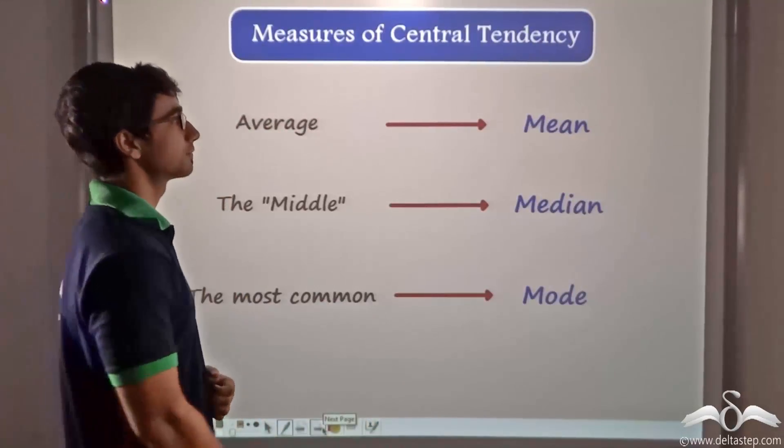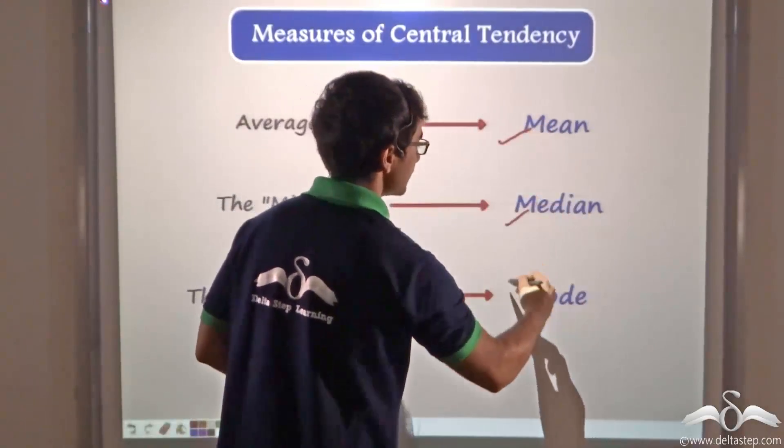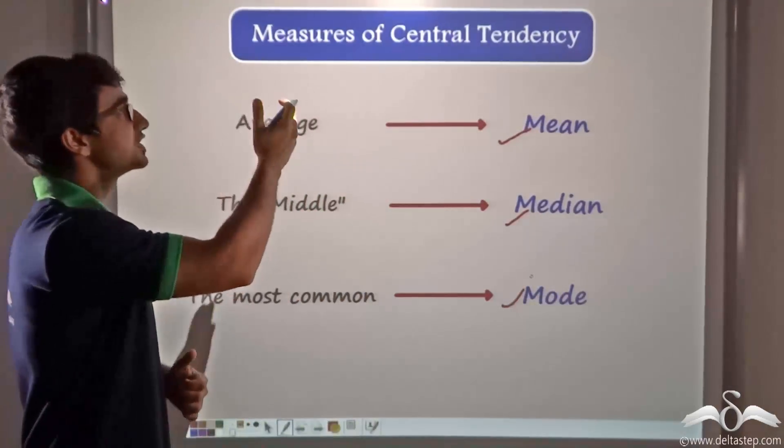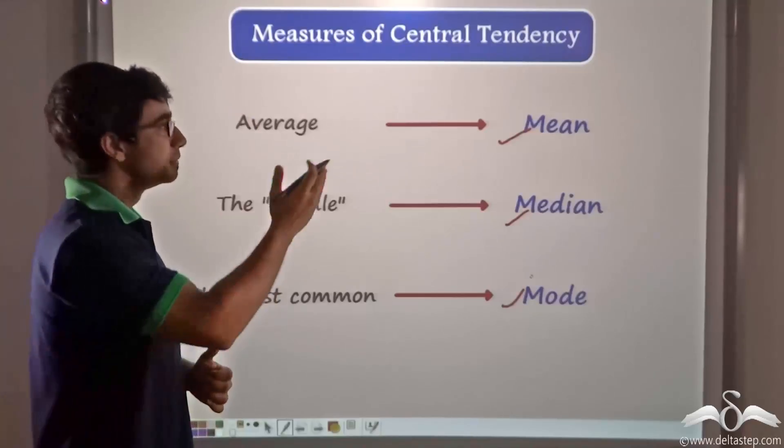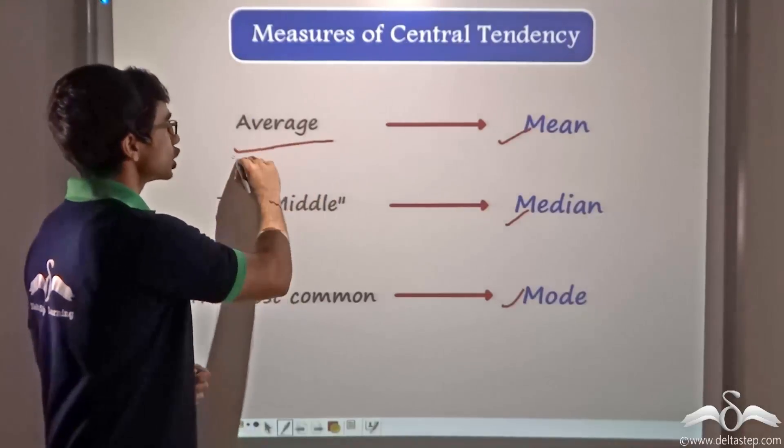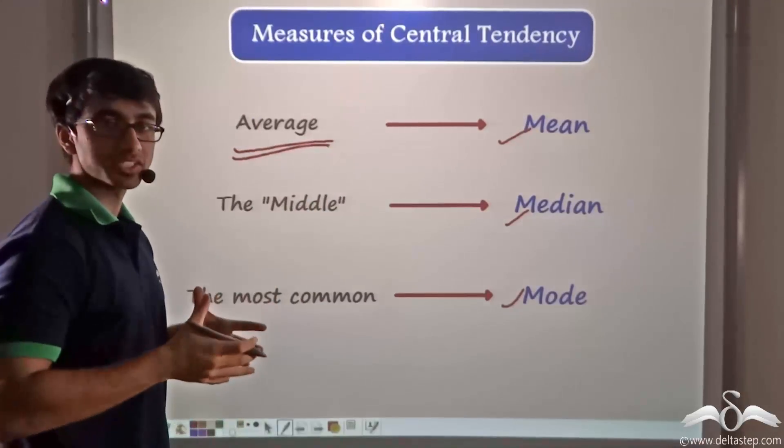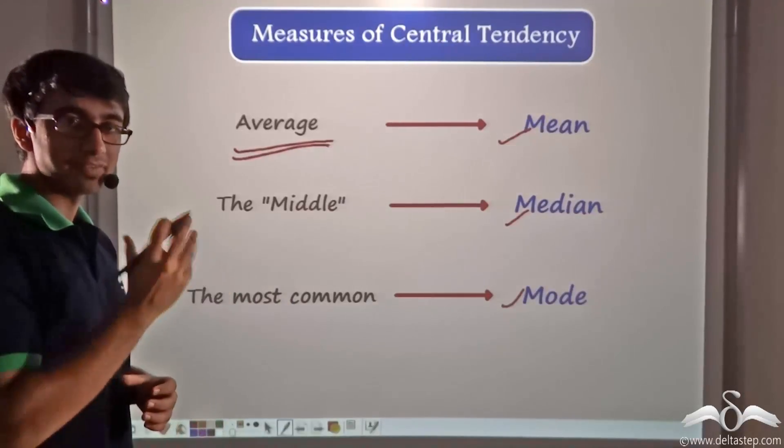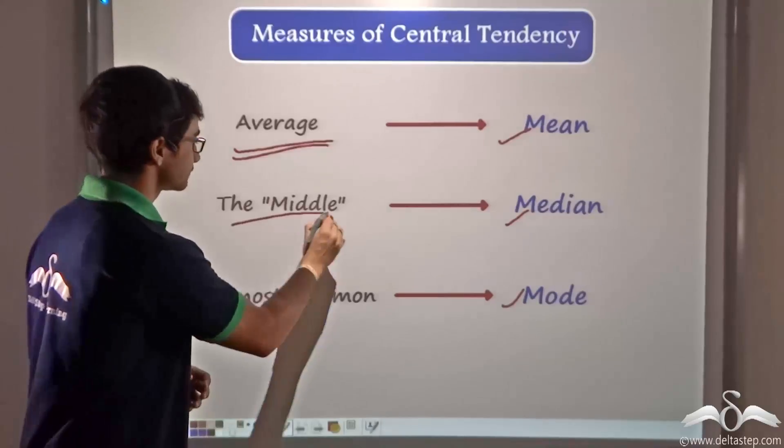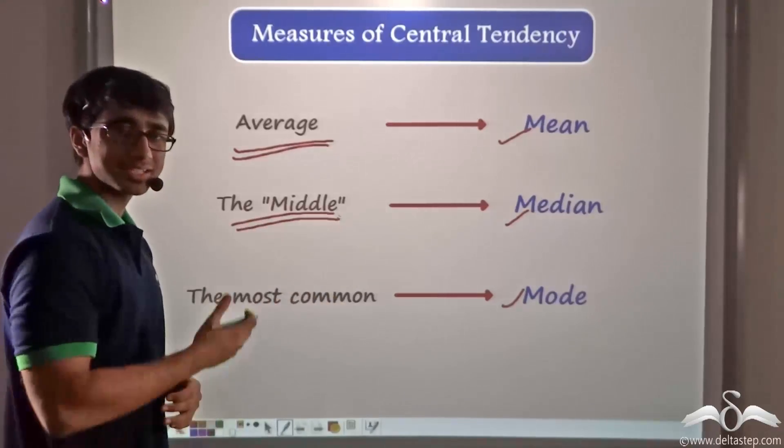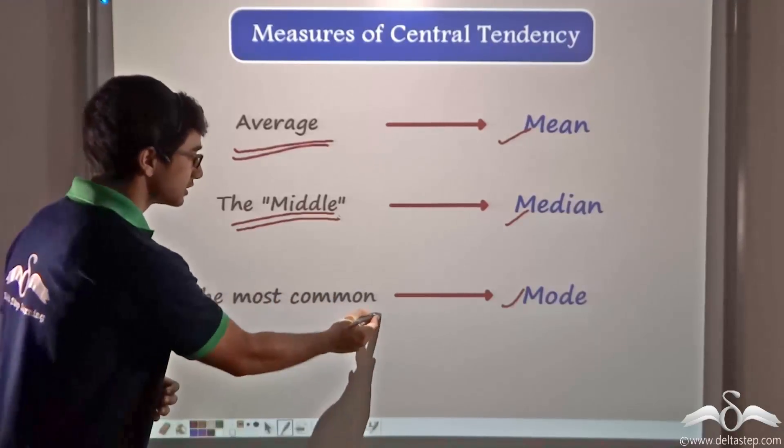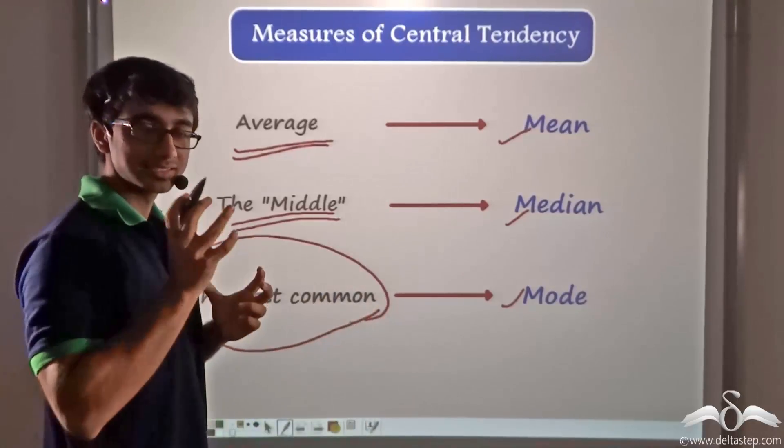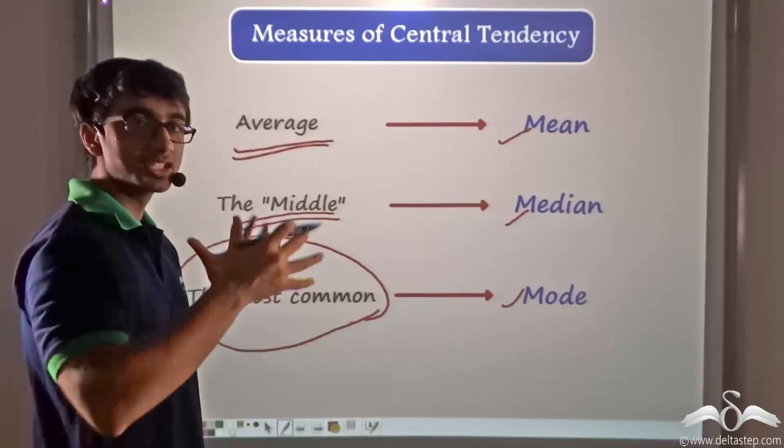So these three terms mean, median and mode collectively are known as measures of central tendency. Mean is nothing but the average of a particular observation set. Median is nothing but the middle value of the observation set. And mode as I just mentioned is nothing but the most common or the most frequent set of data occurring in the total set.